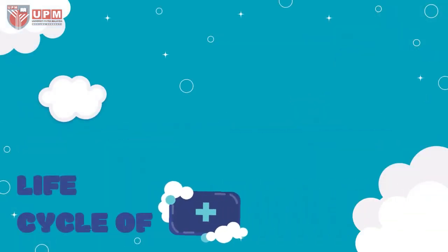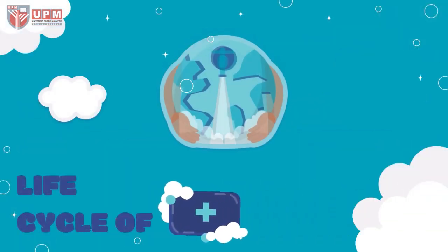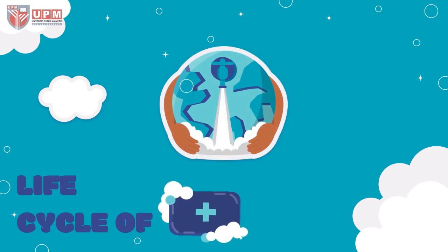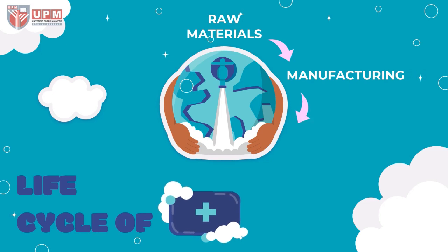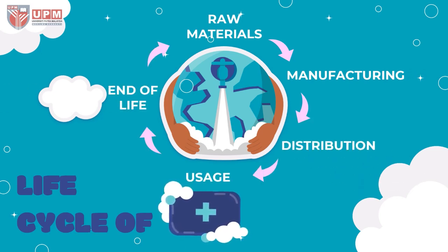Next, let's go to the life cycle of soap. There are five steps in the life cycle of soap: starting with raw materials extraction, manufacturing, distribution, usage, and lastly, end of life.